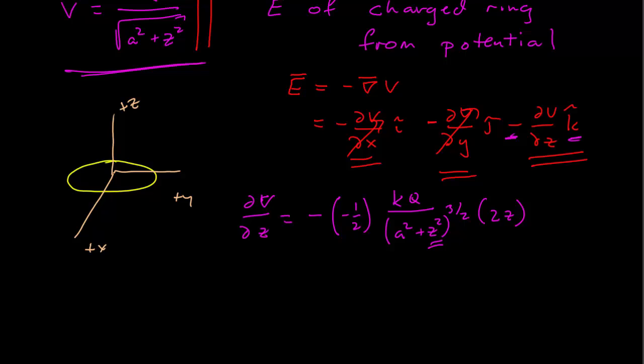And then we add our k-hat. So here's the negative, here's the k-hat, and here is dV/dz.